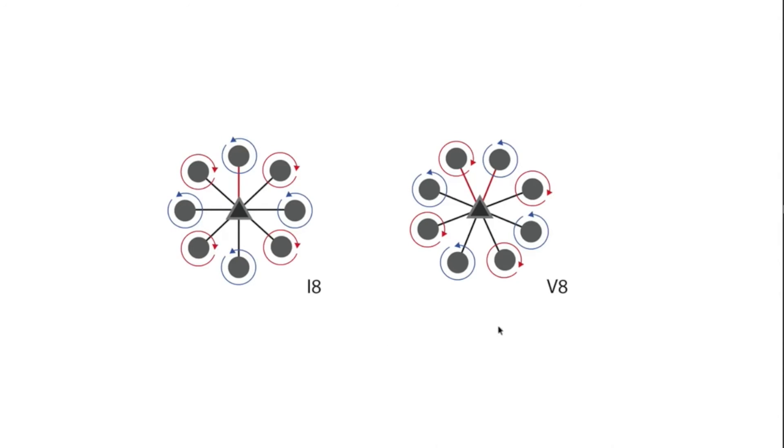Moving on, we have the i8 or v8 configurations, again just like the hexcopter, except that now we have eight motors. You can lose a motor on one of these and not even notice.